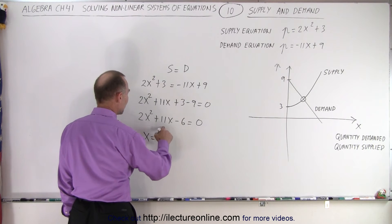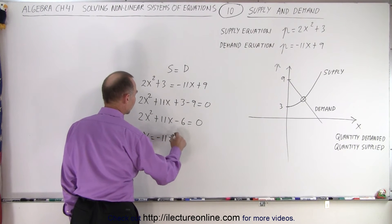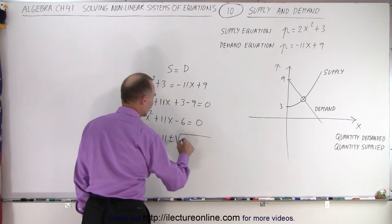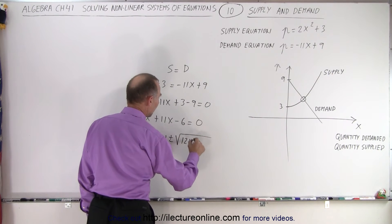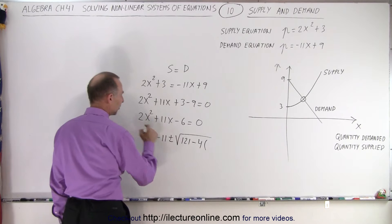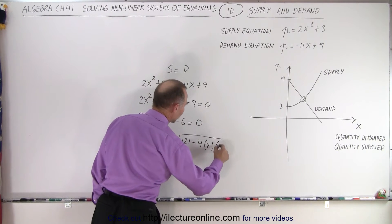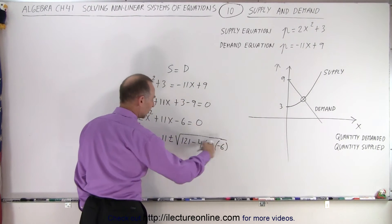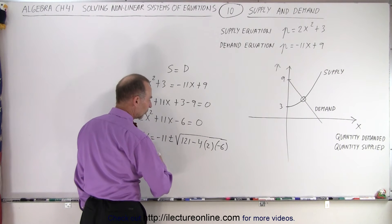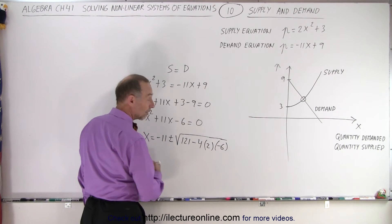We have X is equal to minus B plus or minus the square root of B squared, which is 121, minus 4 times A times C, which is a minus 6. So right away, we could see that the determinant is factorable. It is factorable.